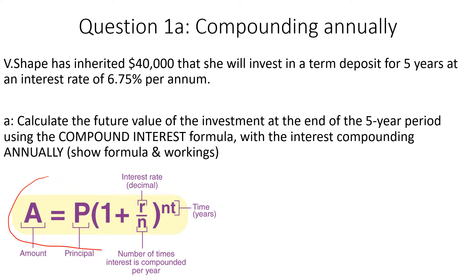Okay, so step one, write down your formula. Step two, identify the variable. So we've got P here is 40,000, the original amount we invested. T is five years. R, we need to convert to a decimal, 0.0675, be careful with your zeros, and it's compounding annually. So N equals one.